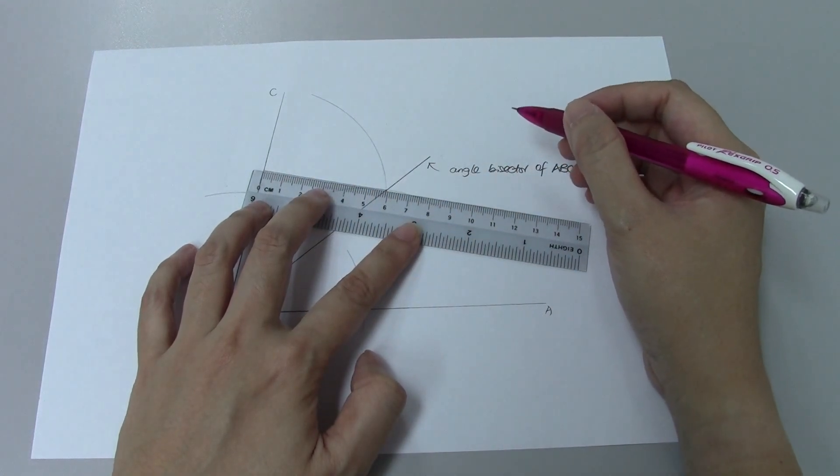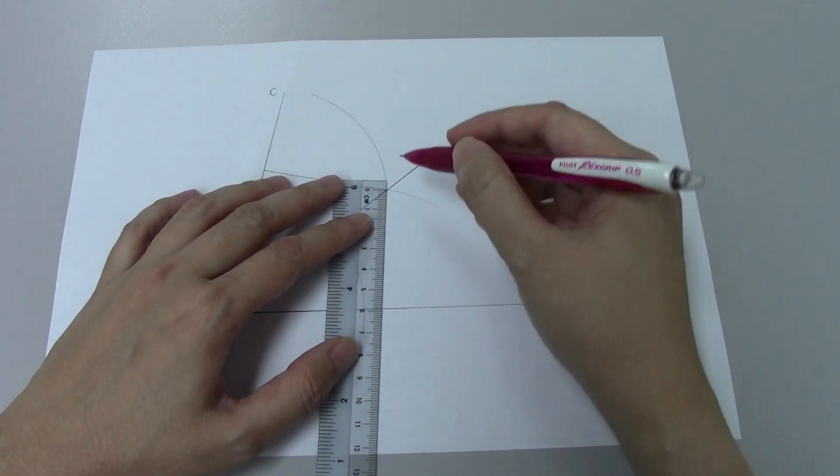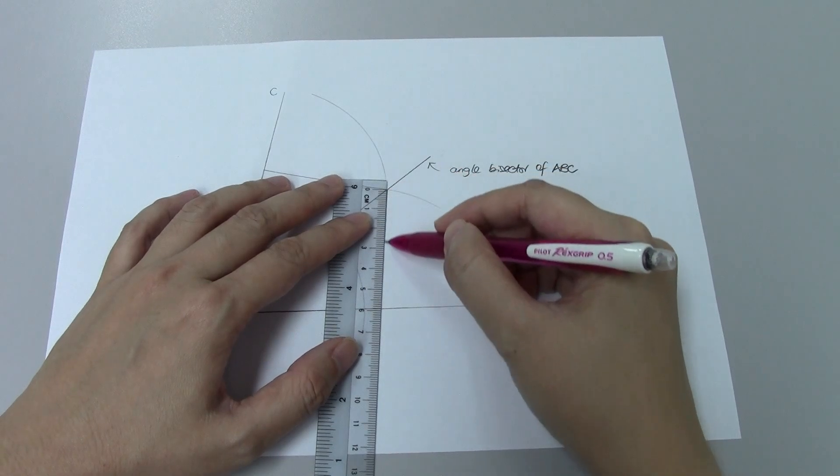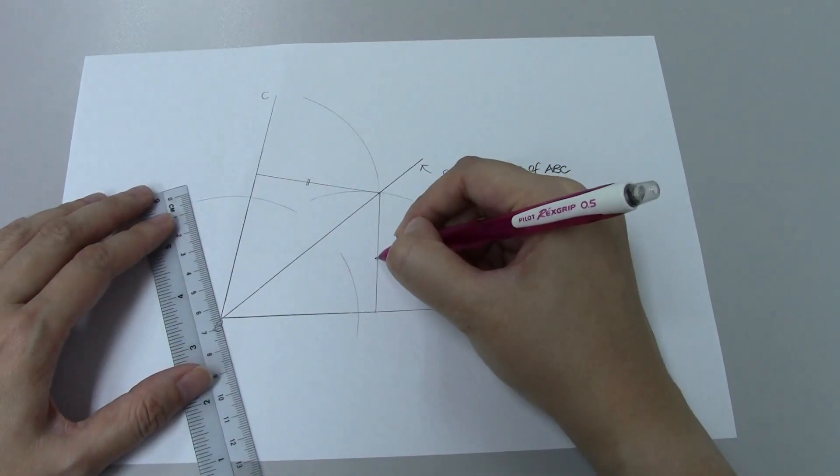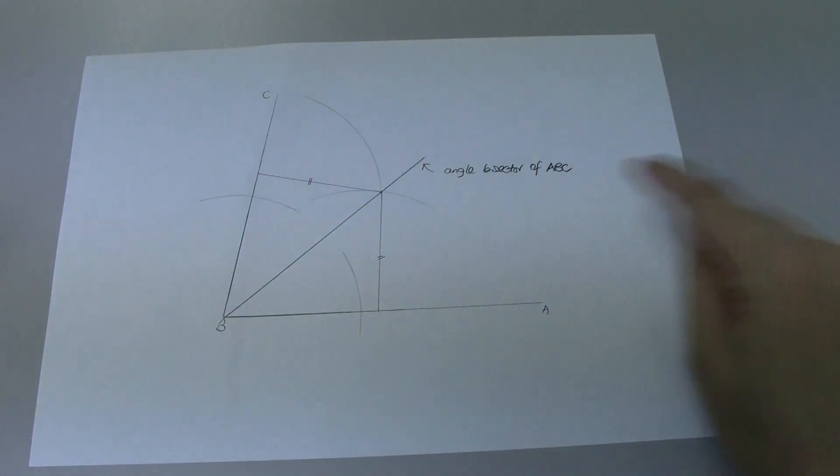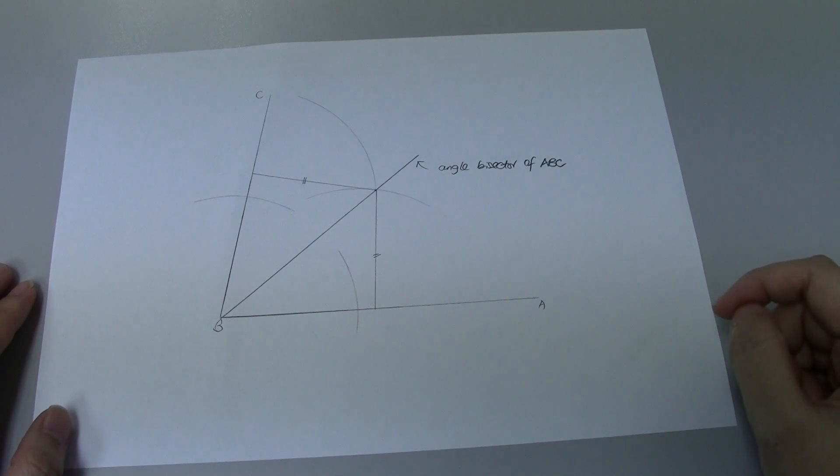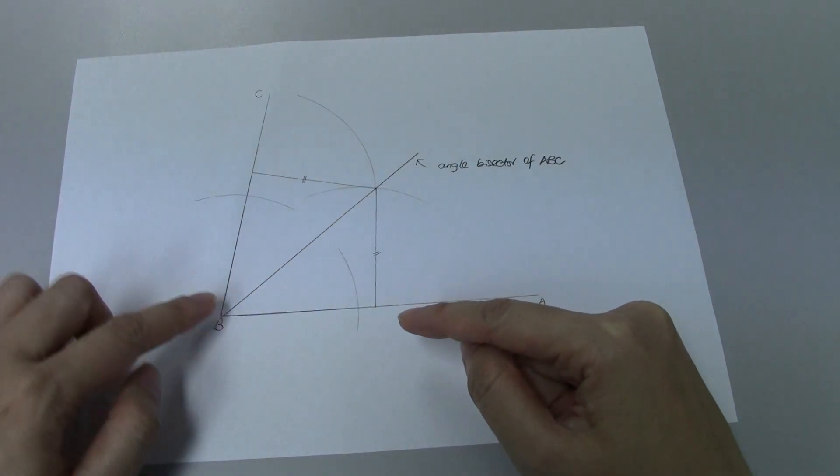So it's approximately 5.9, and that same point if you measure it to your other line AB, it is also 5.9. So which means to say any point on your angle bisector is equidistant to your line AB and your line BC.